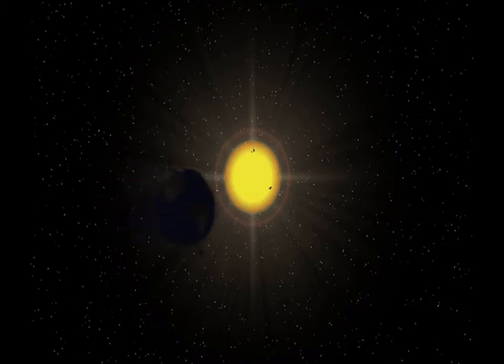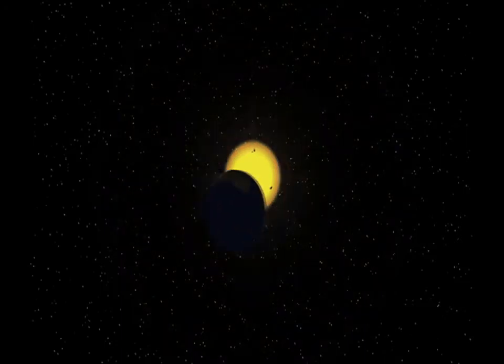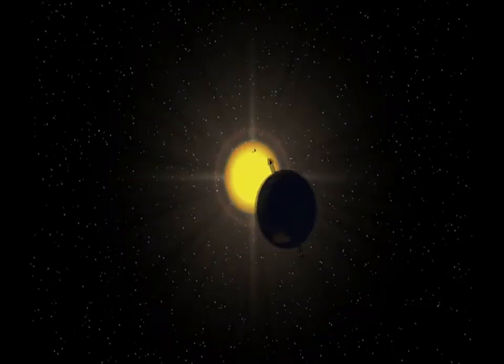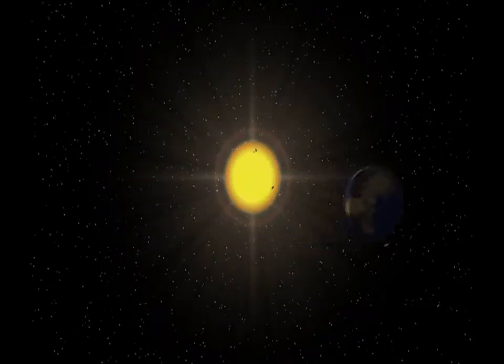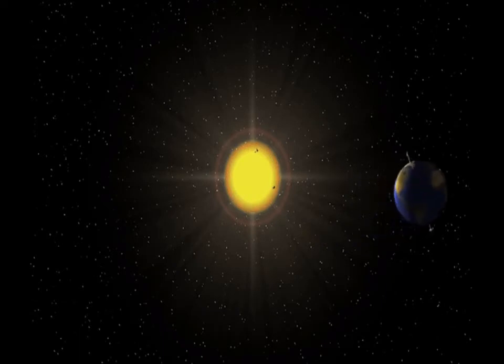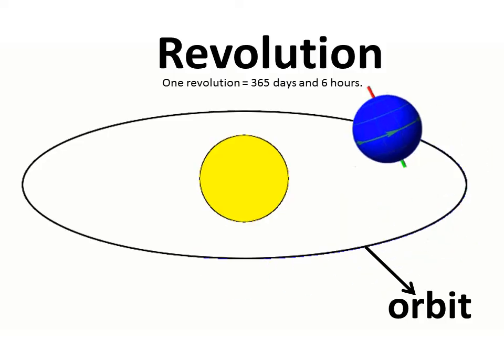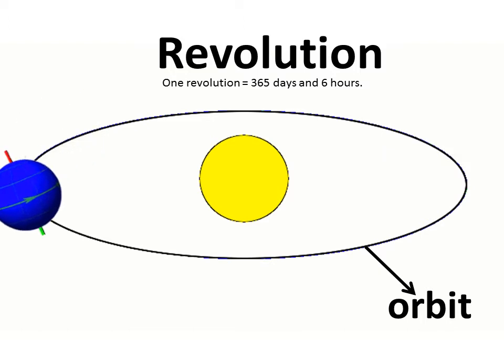At times, many of my students tell me that they don't think that earth is actually moving. But it is always moving. It rotates on its axis and at the same time it moves around the sun in its orbit. This movement is called revolution.